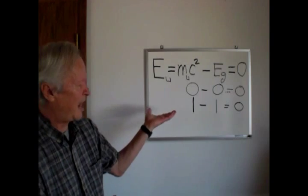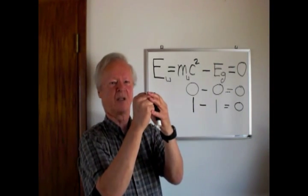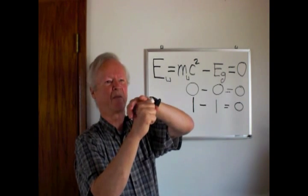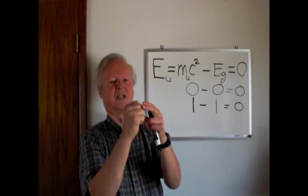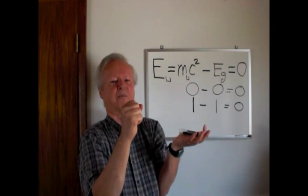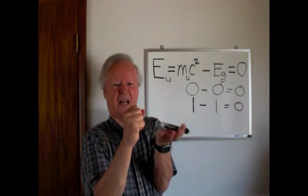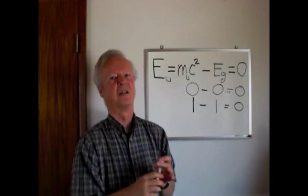Now once this event happens, we have a very small region in the universe where we have some energy content, we have positive and negative, but we have nothing around it. So there's nothing. It's like having a balloon in a vacuum chamber - when you do that, that balloon is going to expand very rapidly.